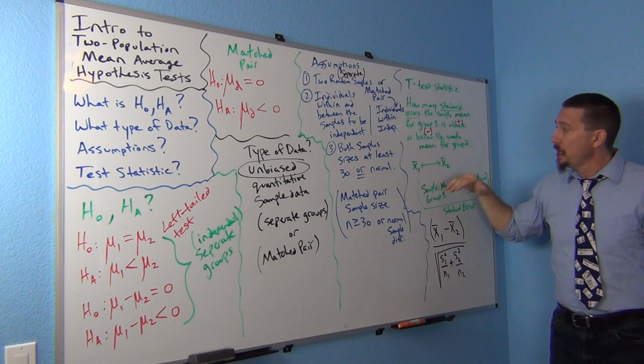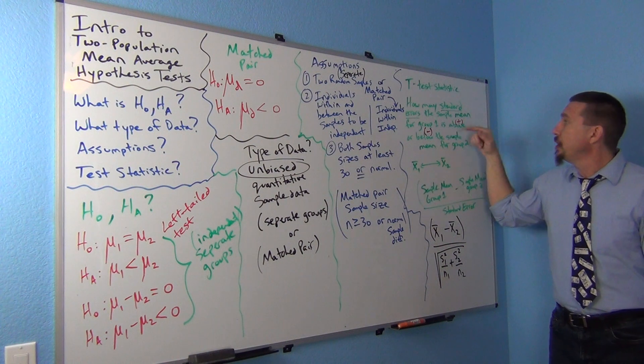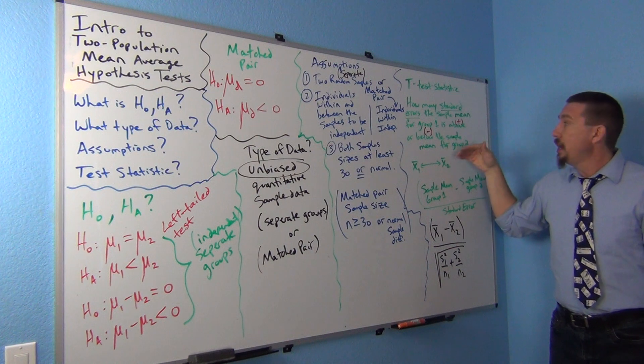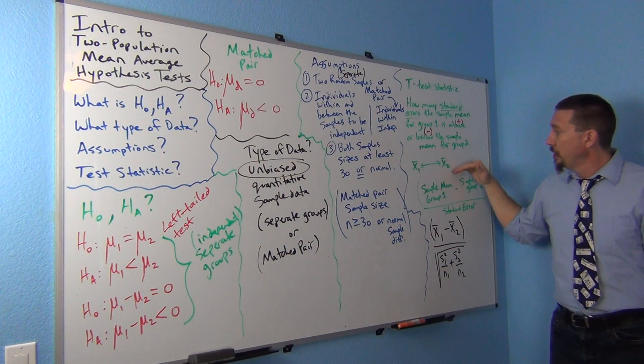Again, if the sample mean for group one was above, you're going to get a positive t-test statistic. And negative is going to tell me the sample mean for group one is lower than group two.